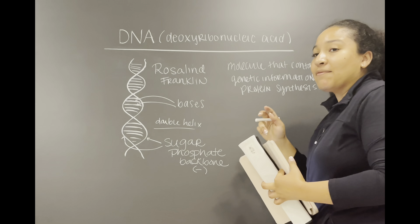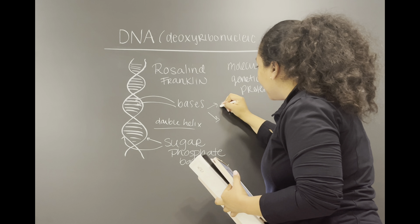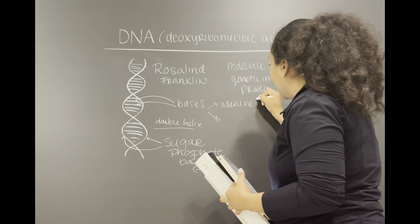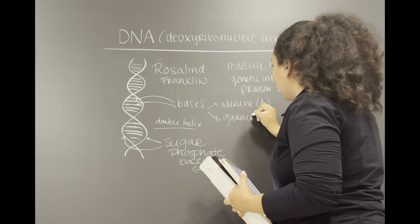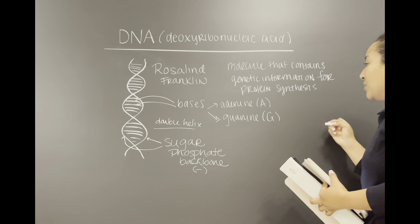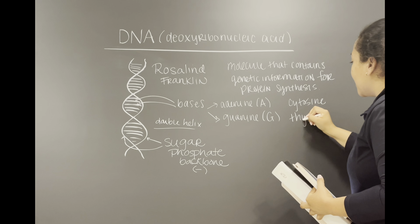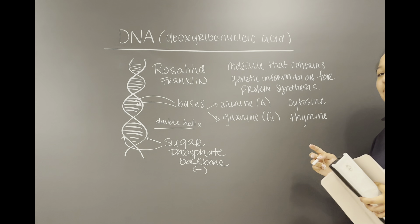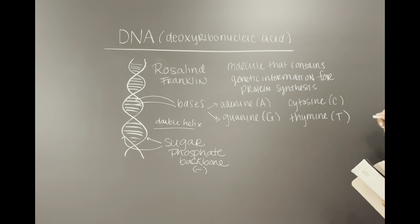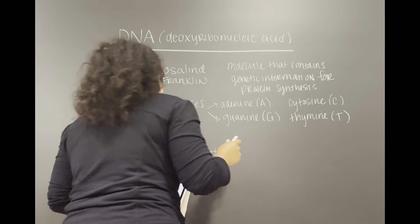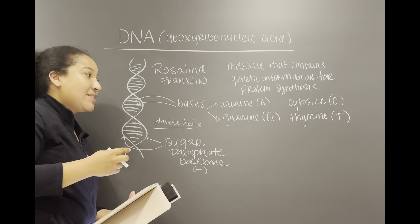These lines are going to be our bases. We actually have four DNA bases: adenine (A), guanine (G), cytosine (C), and thymine (T). These are all the bases that are going to be within DNA.